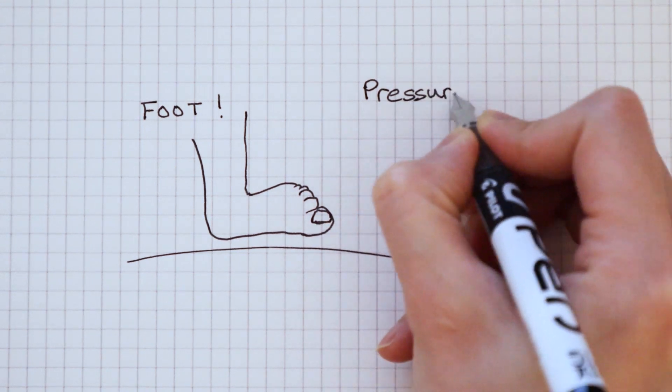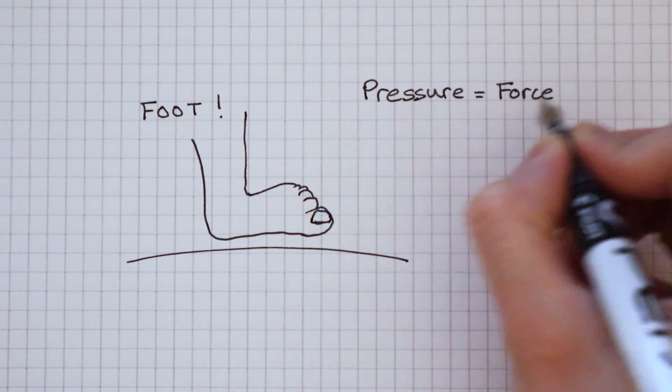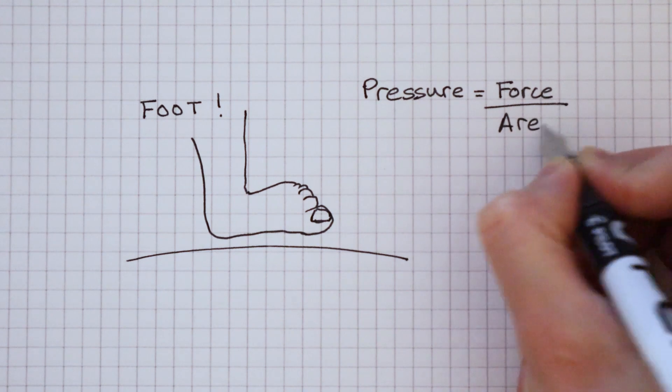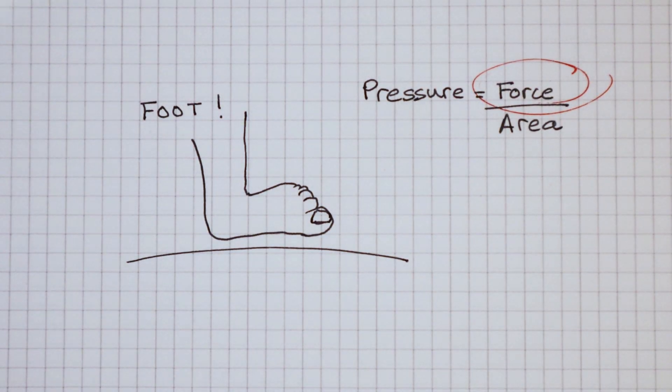The equation to find pressure includes dividing force by area. Let's start with the simpler of the two, figuring out how much force is exerted.